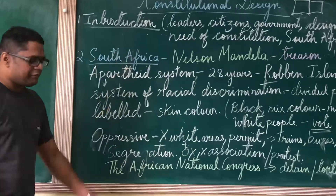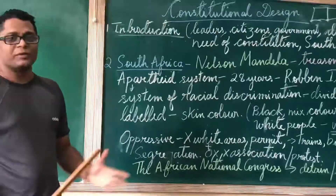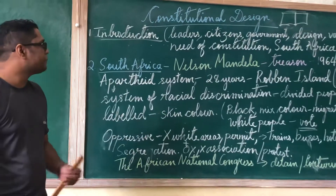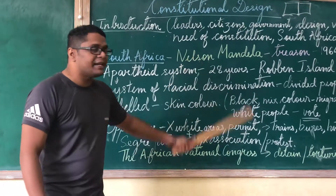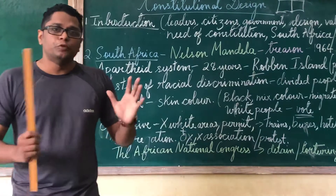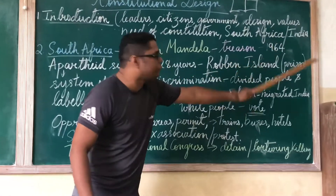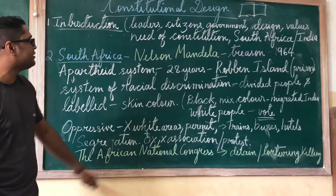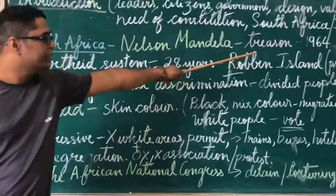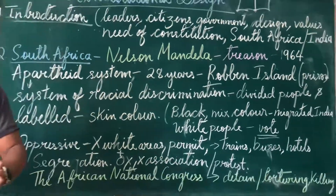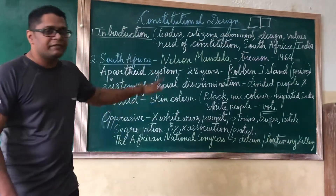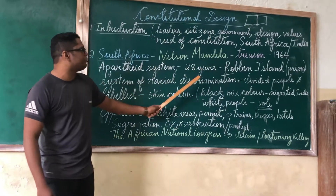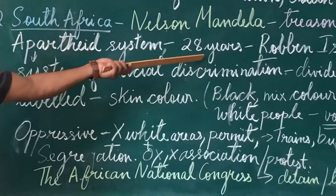So in South Africa, Nelson Mandela was their great leader. In that time, Nelson Mandela and his seven other leaders were put into prison in 1964. The reason given was treason — meaning they said Nelson Mandela and his seven leaders had betrayed the country. That is why they were put into prison, and Nelson Mandela was imprisoned for the next 28 long years.